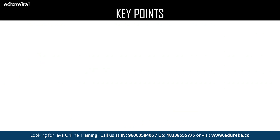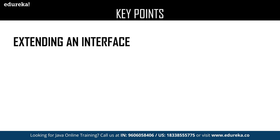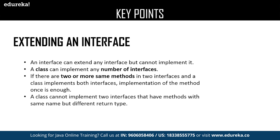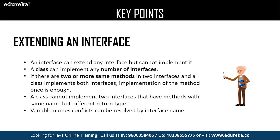Let us move on to the next key point: extending an interface. An interface can extend any number of interfaces but cannot implement them, whereas a class can implement any number of interfaces. If there are two or more same methods in different interfaces, then the class can implement all the interfaces but one single method is enough. A class cannot implement two interfaces that have methods with the same name but different return type. The major advantage is that variable name conflicts can be easily resolved by using the interface name.